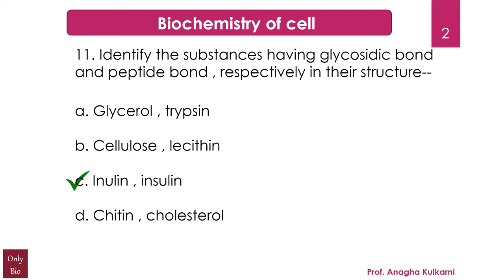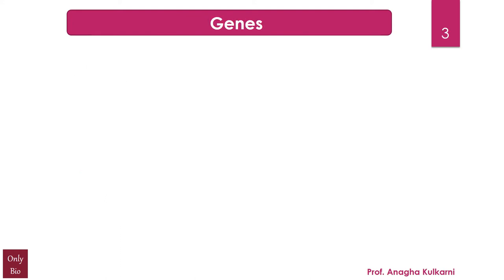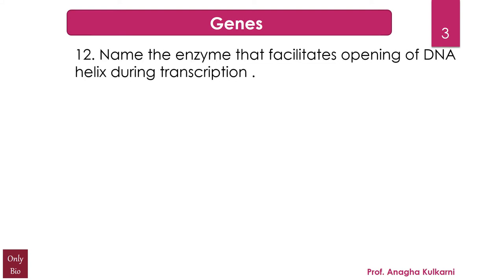Chitin also is a fibrous substance consisting of polysaccharides, but it is paired with cholesterol, which is a fat-like substance found in all the cells of the body. So the right answer is C — inulin and insulin. The next question relates with the chapter Genes, and the question is: name the enzyme that facilitates the opening of the DNA helix during transcription.